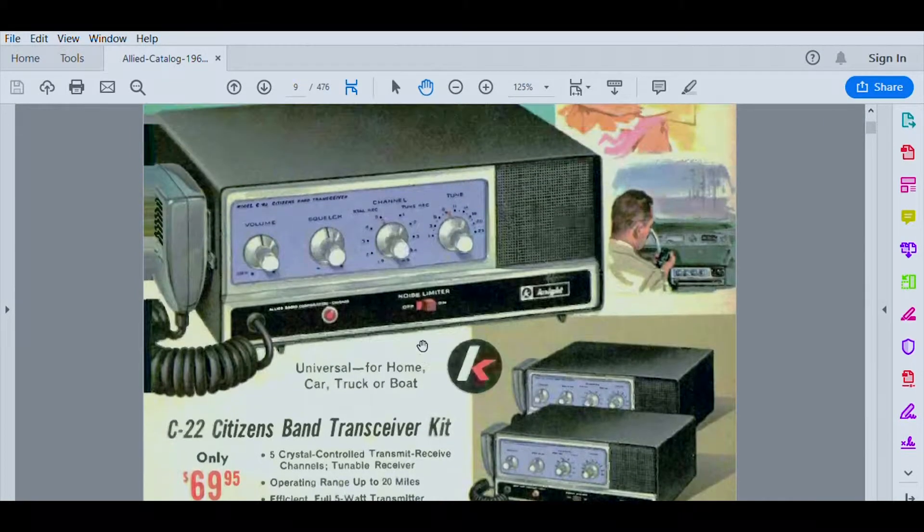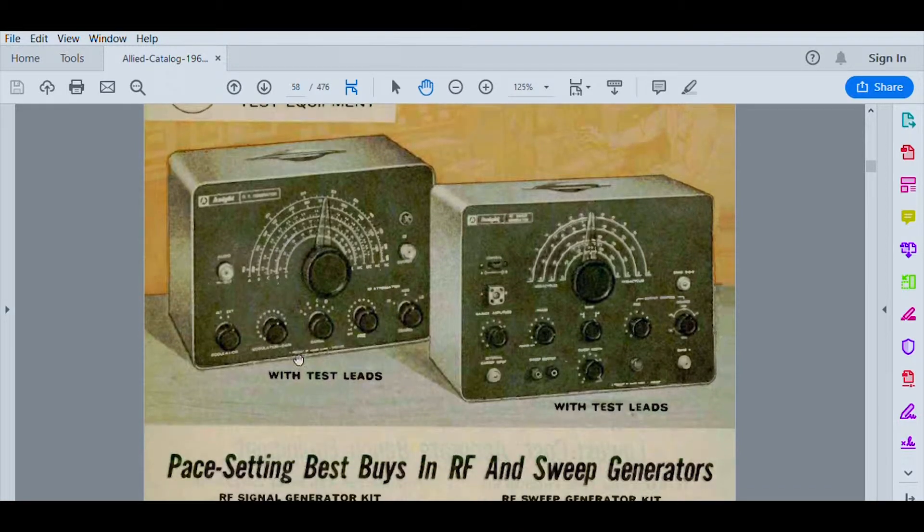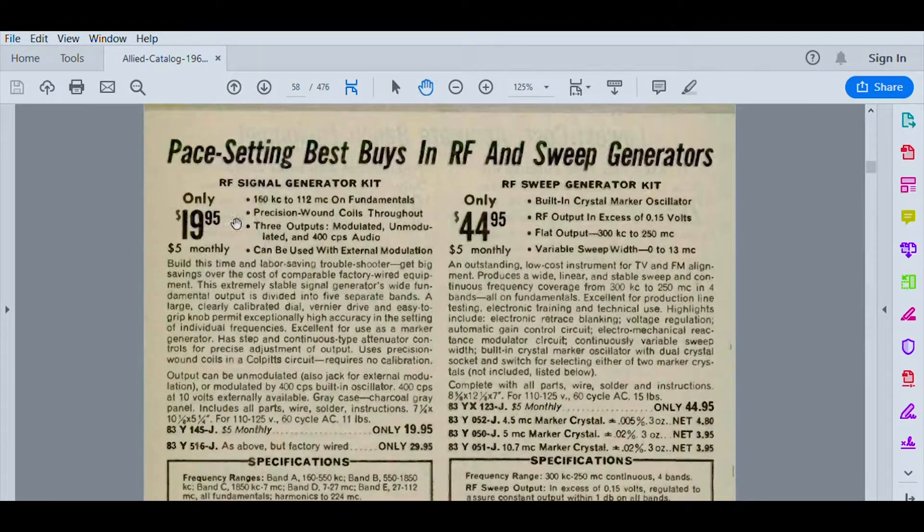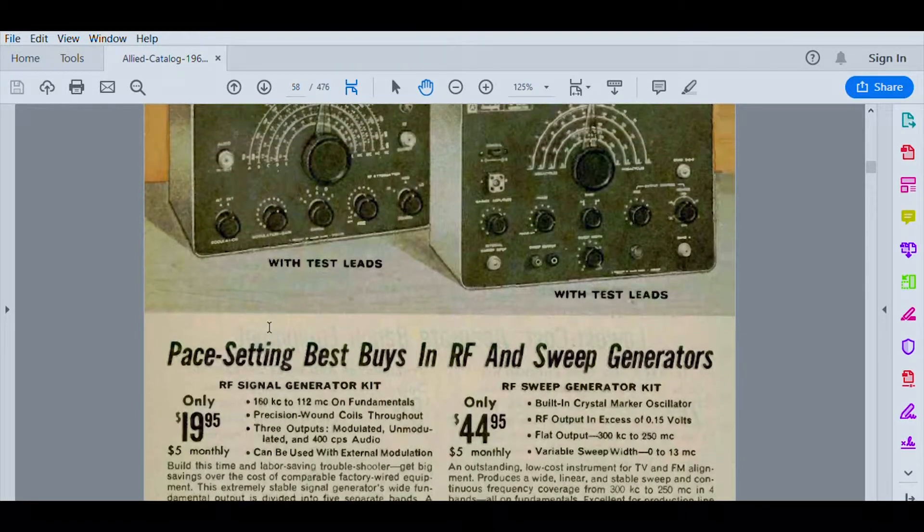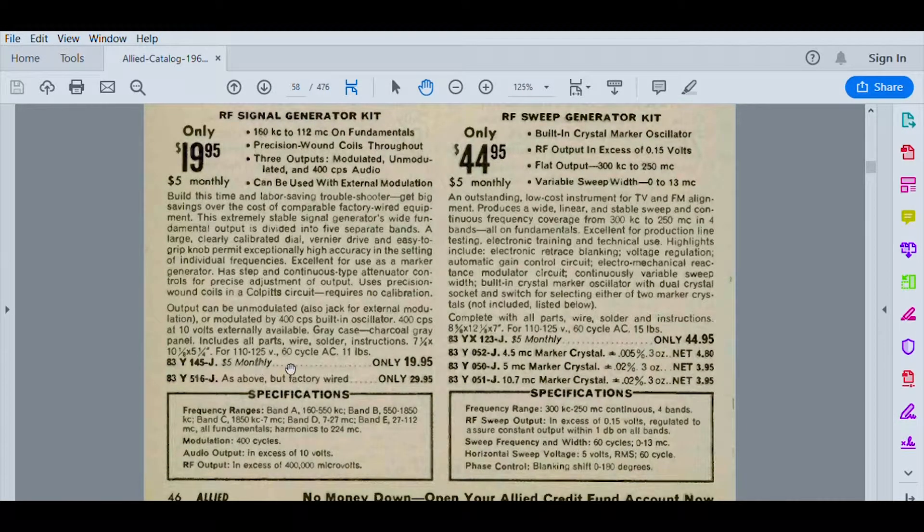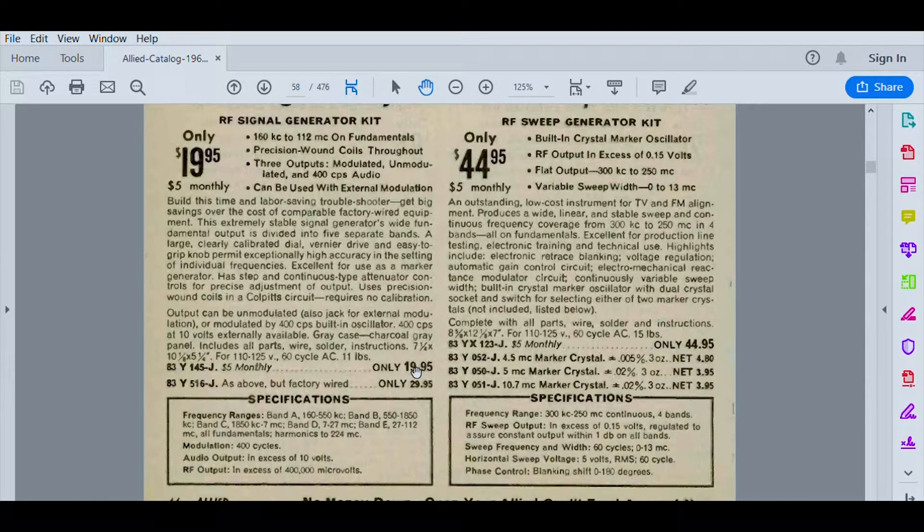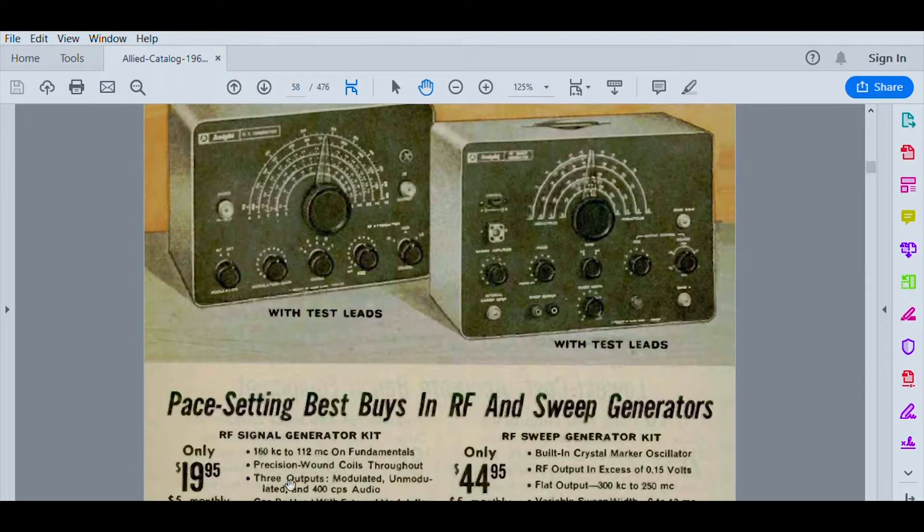I got the Knight kit from page 169. The product that I was interested in ended up being on page 58. Here is the generator I have in front of me. It came with test leads I didn't get. Looking at the price, it's $19.95 for this generator in 1963 dollars. If you want a factory wired, it's an extra ten dollars.